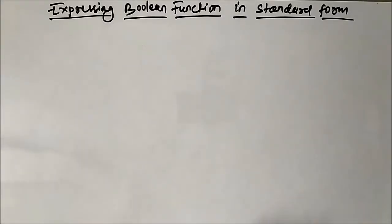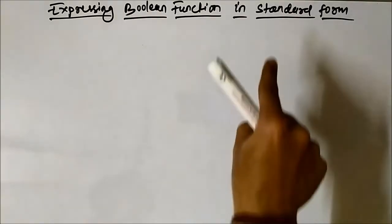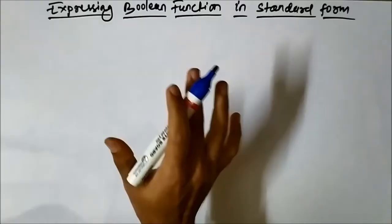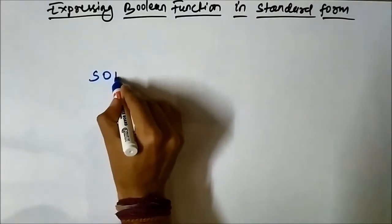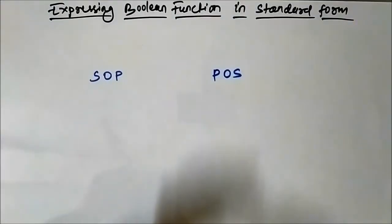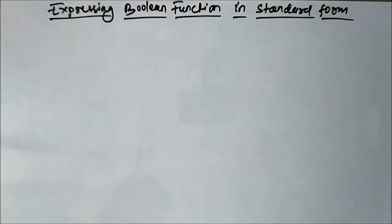Hello friends, welcome to Engineering Tutorial. So far we have discussed the basic concepts related to the standard form of Boolean expressions, that is SOP and POS. In this video we'll discuss, with the help of an example, how to represent any given Boolean expression in standard form or canonical form. Any Boolean expression can be represented in sum of products form or product of sums form. Let us first discuss SOP and then we'll discuss POS.